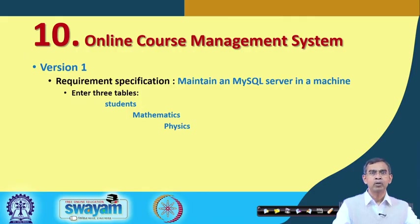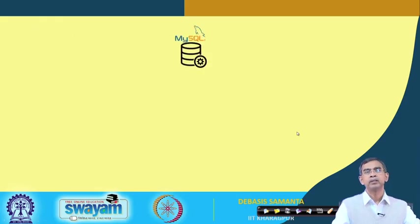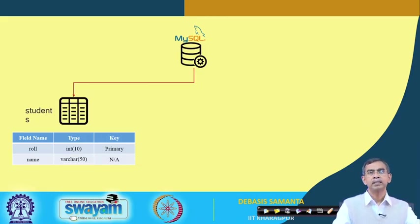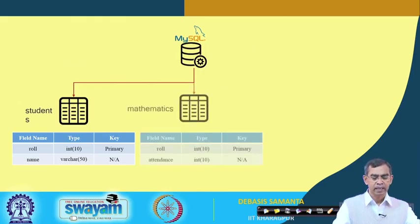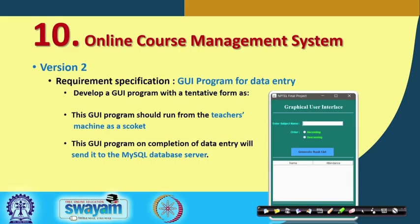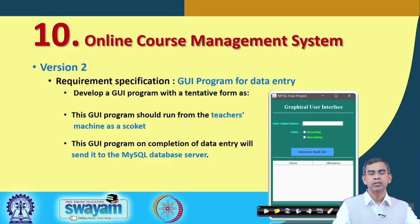For simplicity, we maintain a database server on a machine connected to the network. The database server contains three tables: a student table, a mathematics table, and a physics table, all maintained in the MySQL server. The student table has roll number (integer, size 10) and name (varchar, size 50) with roll number as primary key. For maths and physics tables, roll number, attendance, and marks obtained are to be maintained.